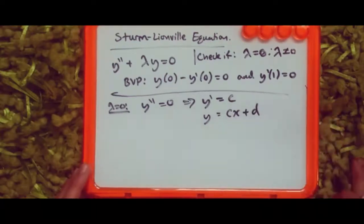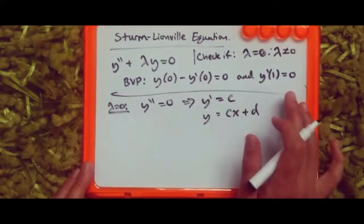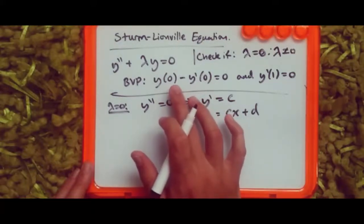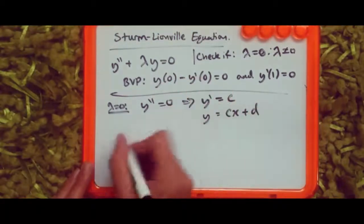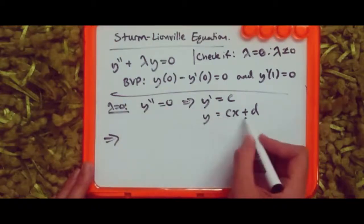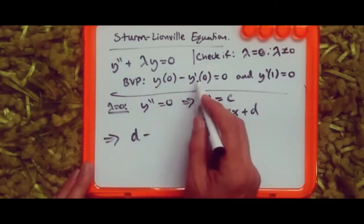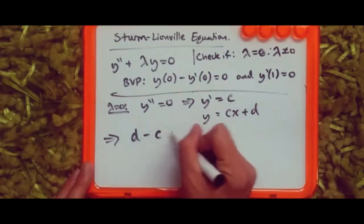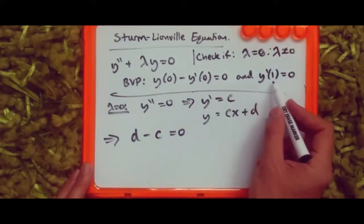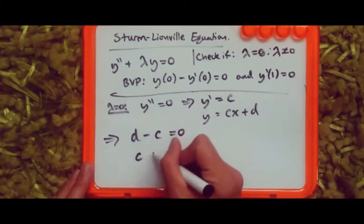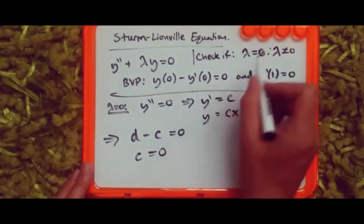Now we apply both boundary conditions. For the y equation at x equals zero, we get y equals d. For the first derivative at x equals zero, we get y' equals c. So the first BVP gives us d minus c equals zero. For the second BVP, y'(1) equals c, so c equals zero.